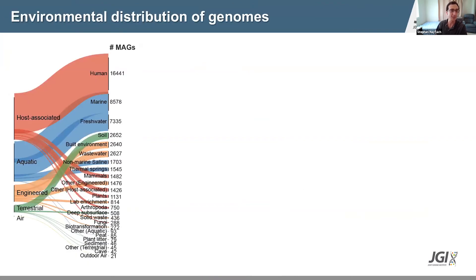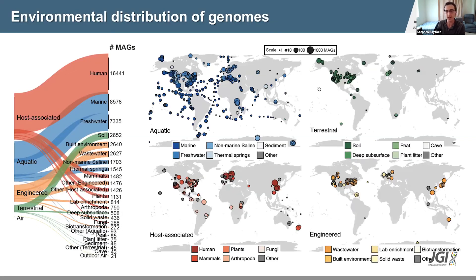Looking at the environmental distribution of these genomes, they come from a variety of environments including human and other host-associated environments, marine, freshwater, and soil. Looking at the geographic distribution, these maps show where the genomes came from, and you can see they cover the majority of the world's oceans, as well as much of North America, Europe, and China.